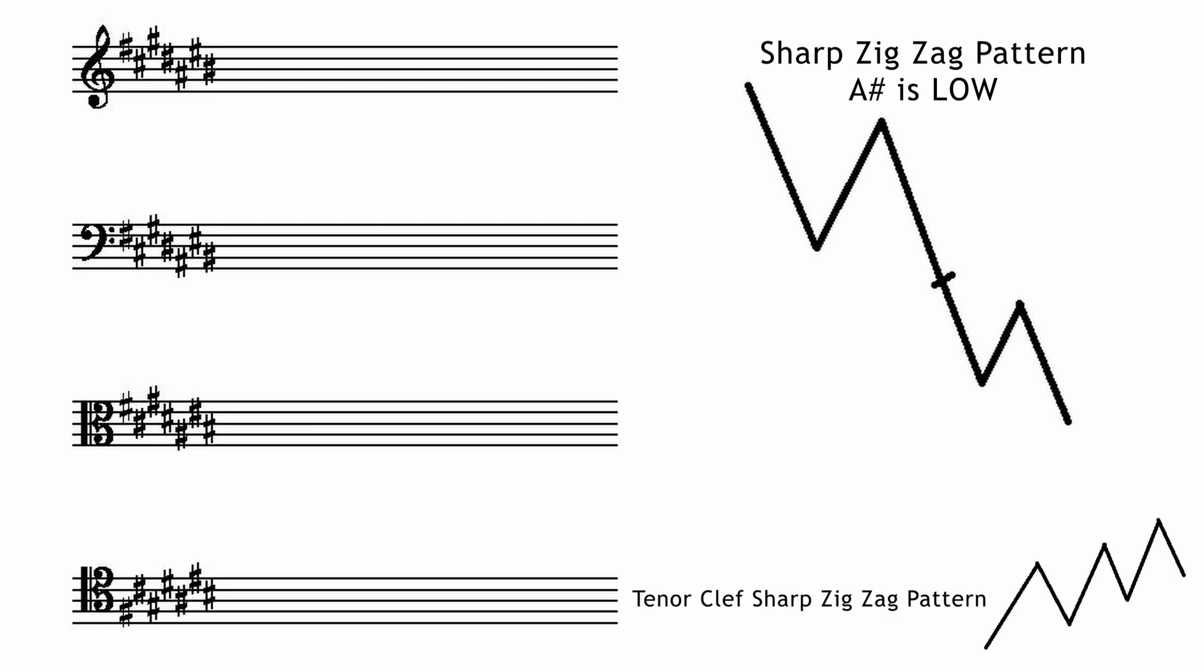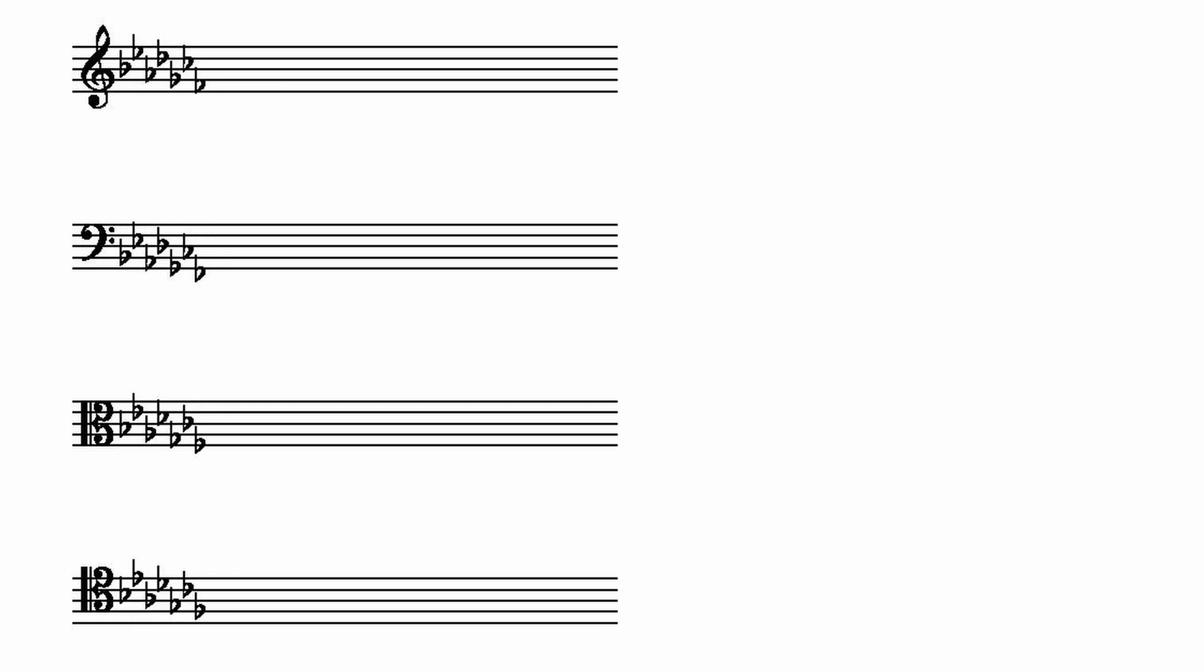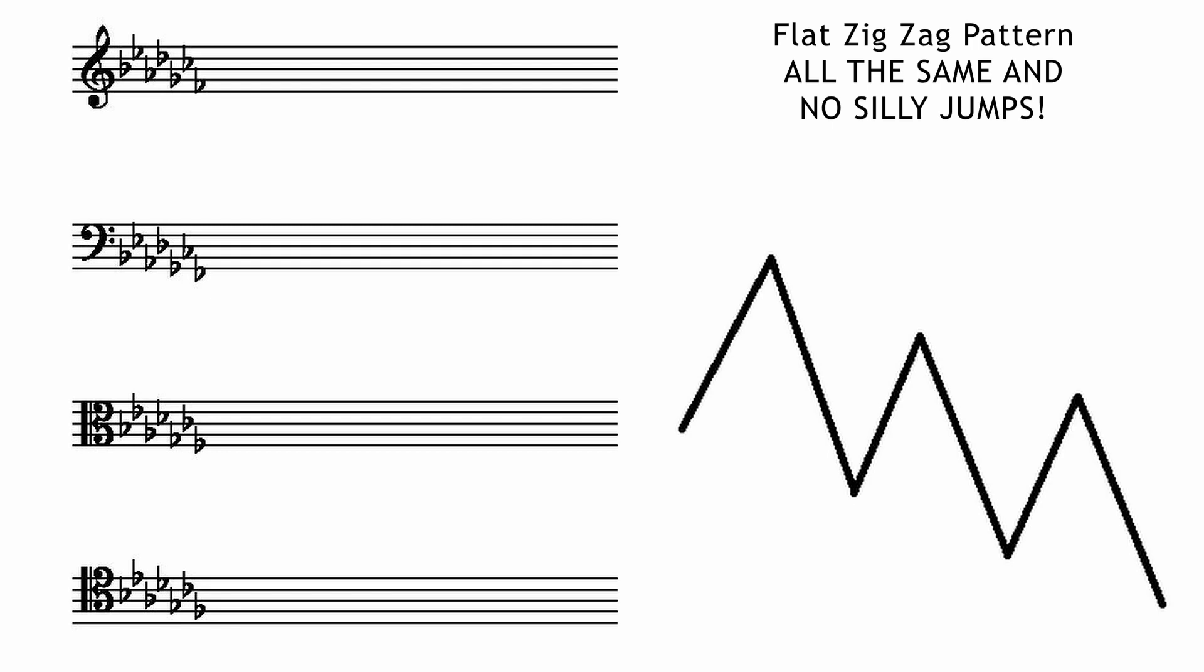This also makes writing key signatures in four different clefs a pain. They tend to follow a satisfying zigzag pattern. The sharps however drop the A sharp down the octave before carrying on with the zigzag pattern apart from the tenor clef which just carries on with the zigzag pattern the whole time. The flats are much nicer, sticking with the zigzag pattern the tenor clef did for the sharps for all four clefs.